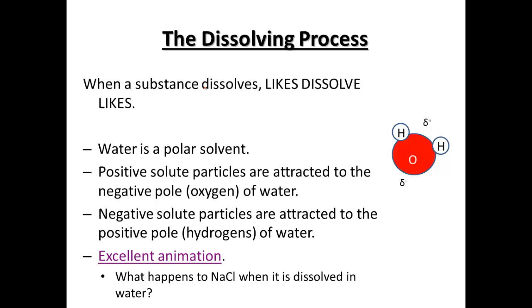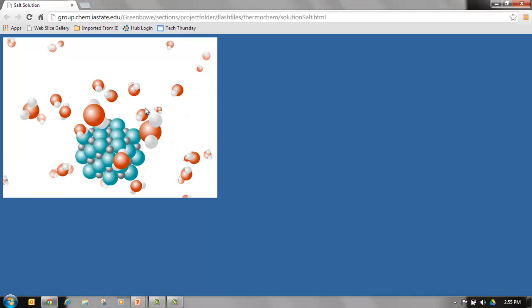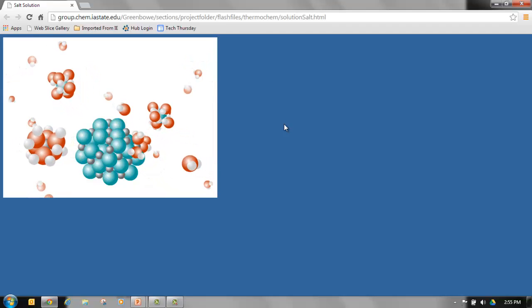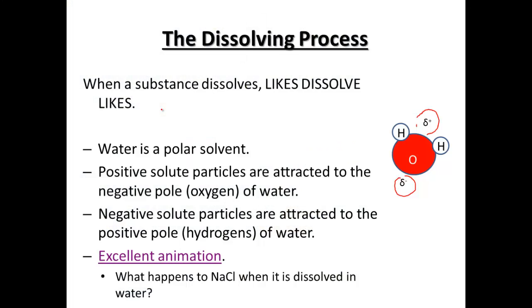You don't need to write anything down here but you're going to hear likes dissolves likes coming up, so water is a polar solvent. That plus and minus is what it's going to be attracted to, very much so for ionic compounds. An excellent animation shows those salt crystals, the chlorine in the center attracted to the positive and the sodium attracted to the negative side. Each would happen one step at a time.